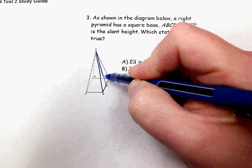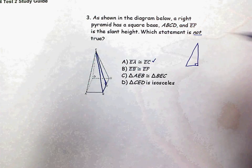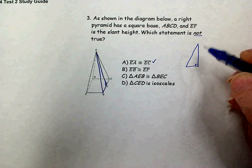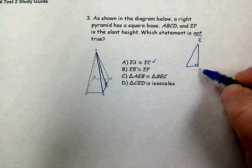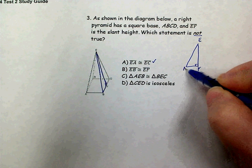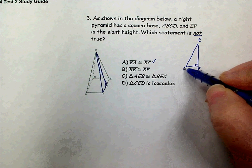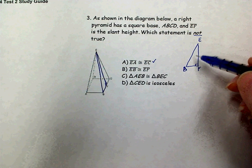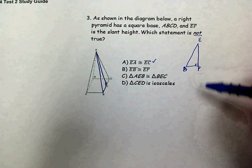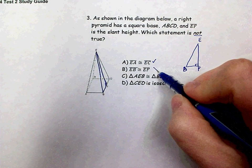EF is perpendicular to that side so you have a right angle there, and so EB would be the hypotenuse of that side. So we know that EB and EF cannot be the same length because the hypotenuse is always the longest side of a right triangle. So this is not true.